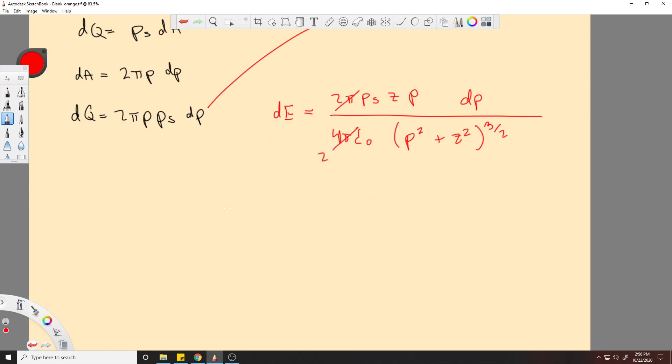These will cancel. This will be a 2. So dE will be rho s, z, rho, d rho. I keep saying p for rho. It's just because it looks like a p to me, but it's a rho.